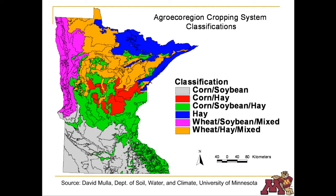Crops are also dominant in certain geographic areas. The different areas have evolved through the years, a result of what each region grows best, market trends, and the placement of support industries, including milk processing and meat packing plants.